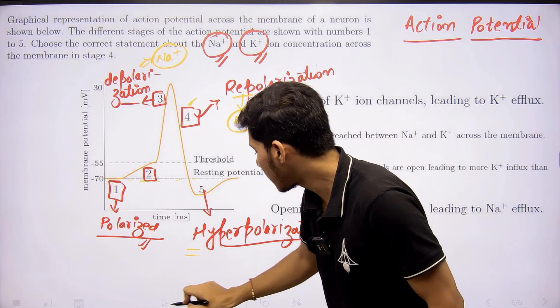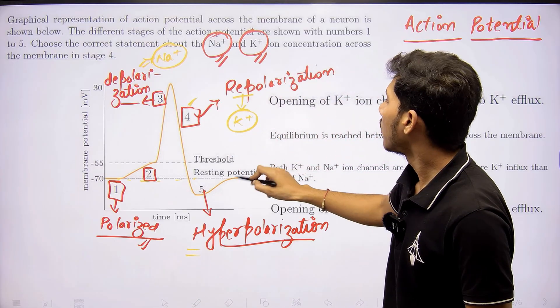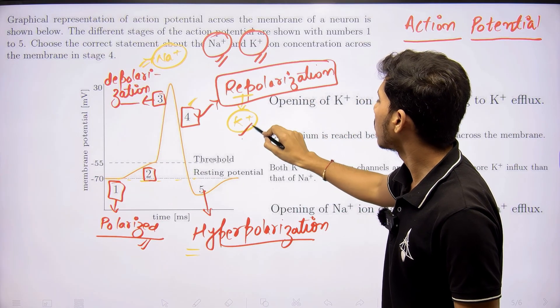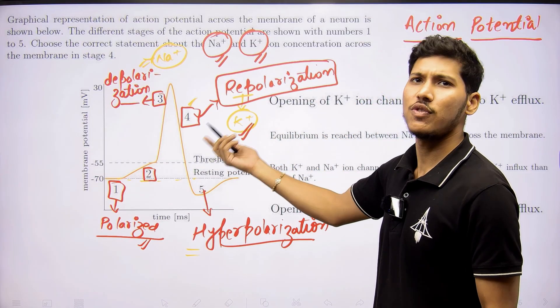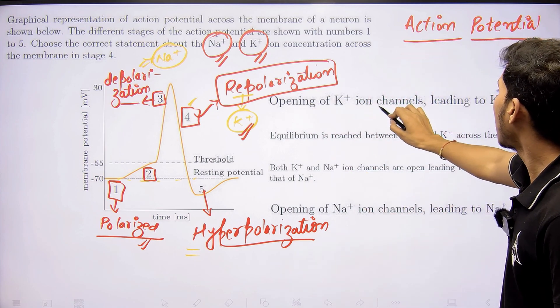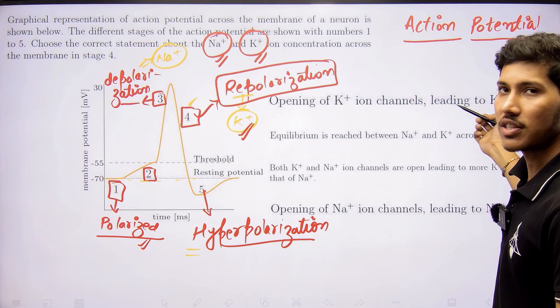Now they are specifically asking for the fourth step. We know that the process of repolarization corresponds to the opening of K+ ion channels, which will be the correct answer here. Let's see the options: opening of K+ ion channels leading to K+ efflux - this is the correct answer.